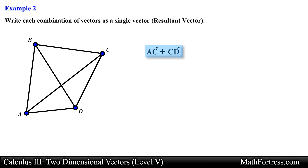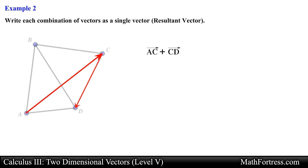Here we are asked to add vector AC and vector CD. Like in the previous example let's apply the triangle law for vectors. Notice that the tail of vector CD is aligned with the head of vector AC. This means that the resultant vector is going to have an initial point at A and a terminal point at D. In other words the resultant vector would be vector AD.